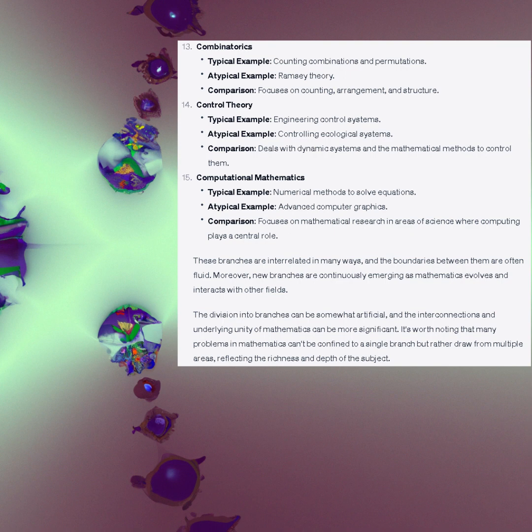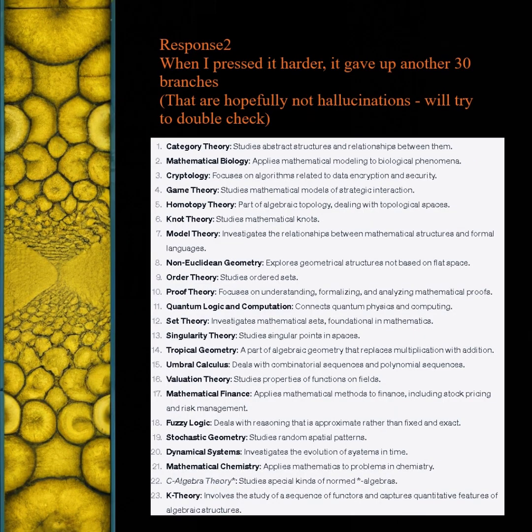Computational mathematics. Typical example: numerical methods to solve equations. Advanced example: advanced computer graphics. Comparison: focuses on mathematical research in areas of science where computing plays a central role. Response 2. When I pressed it harder, GPT gave up another 30 branches — hopefully not hallucinations. See my eventual follow-up where we'll try to double-check them against Wikipedia.